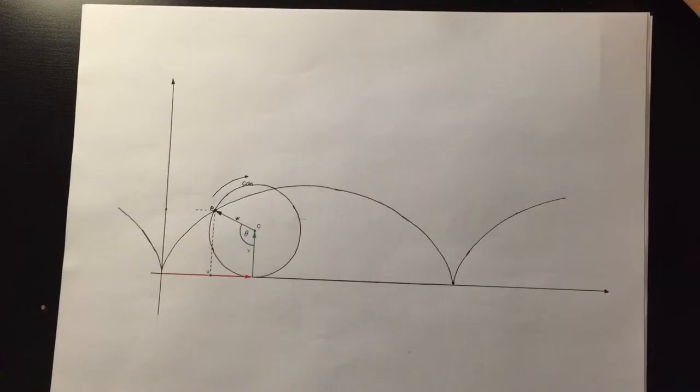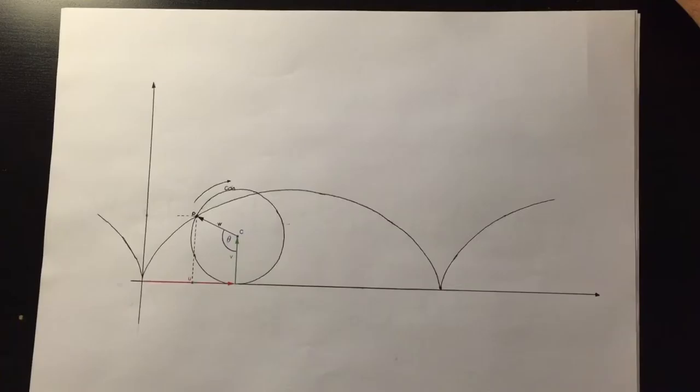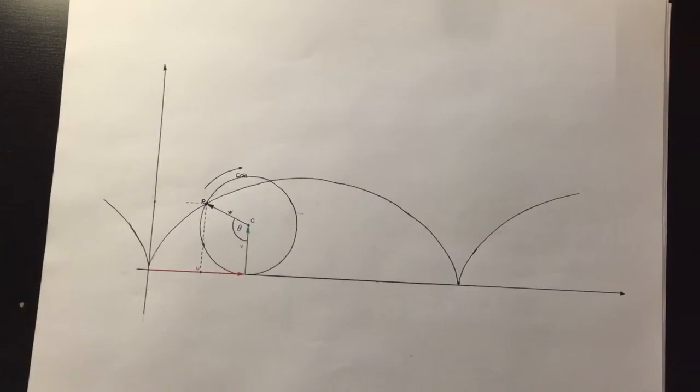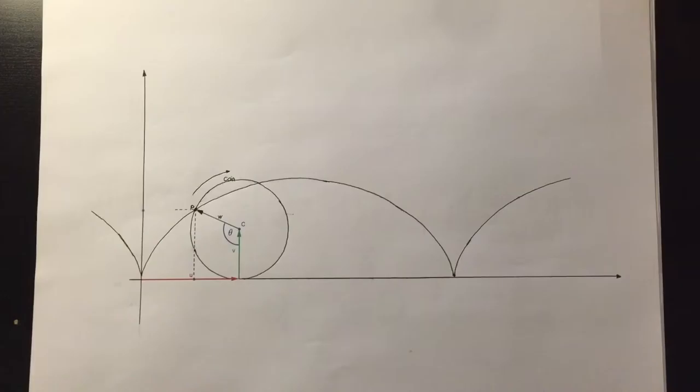Finally, let us consider for simplicity that the circle is stationary and centered at the origin. Let us look at vector w as an arrow pointing from the center of the circle. Thus, vector w has a magnitude of r and moves clockwise as theta increases, starting at position 0 minus r.